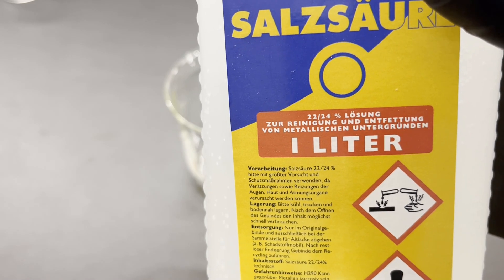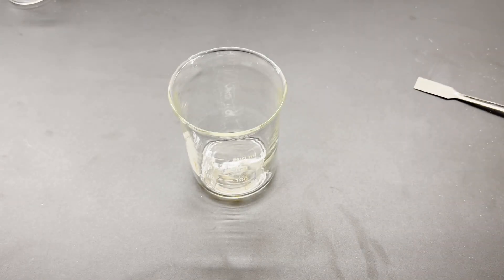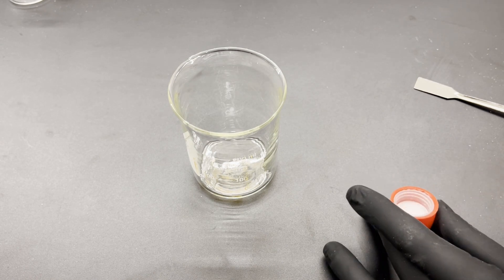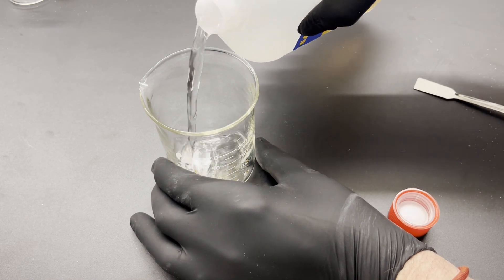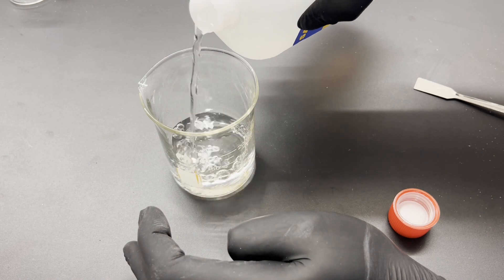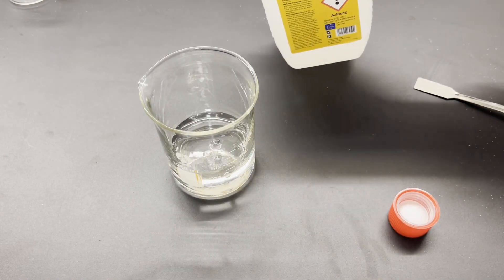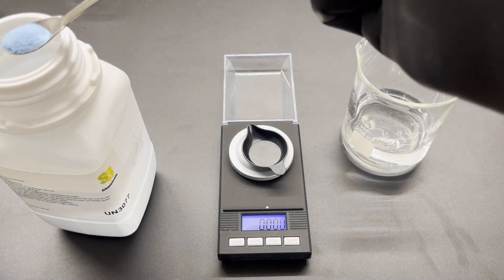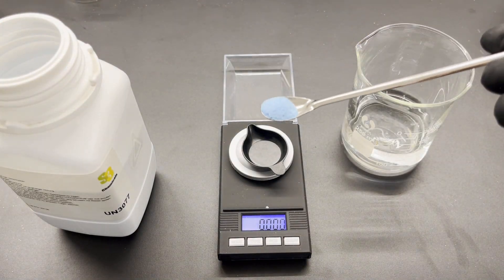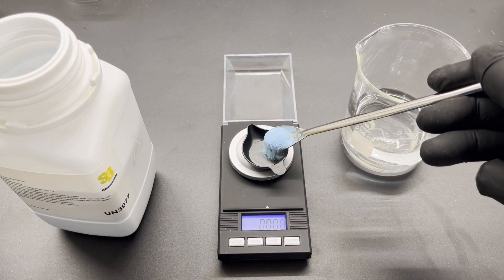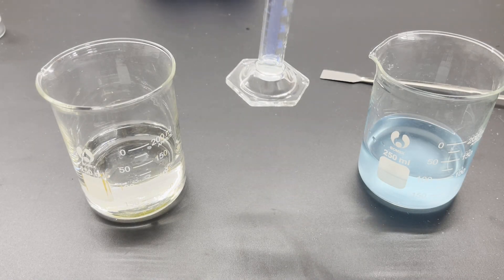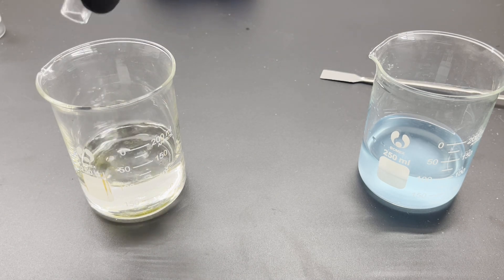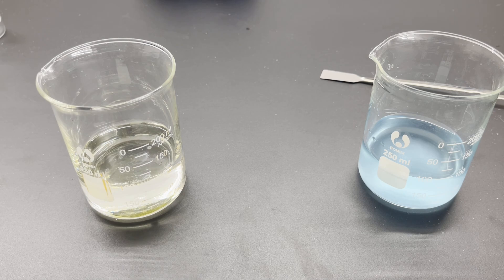In the meantime, 100 ml of 22-24% hydrochloric acid are added to another beaker. In the next step, 1.25 g of copper sulfate pentahydrate is dissolved in 100 ml of distilled water. 0.5 ml of the copper sulfate solution is added to the previously measured 100 ml of hydrochloric acid.